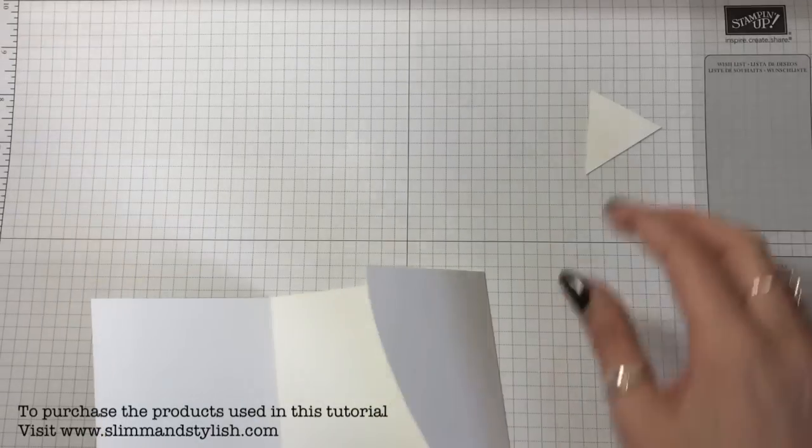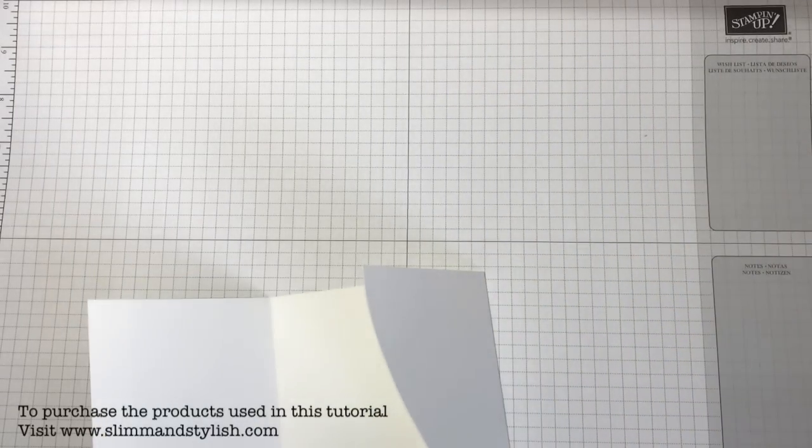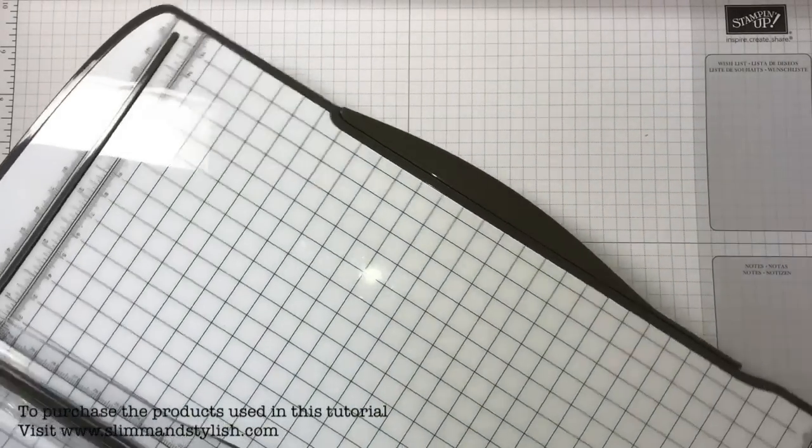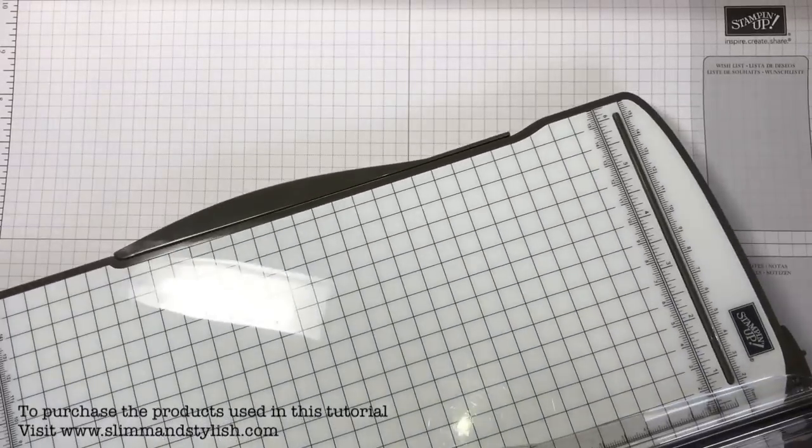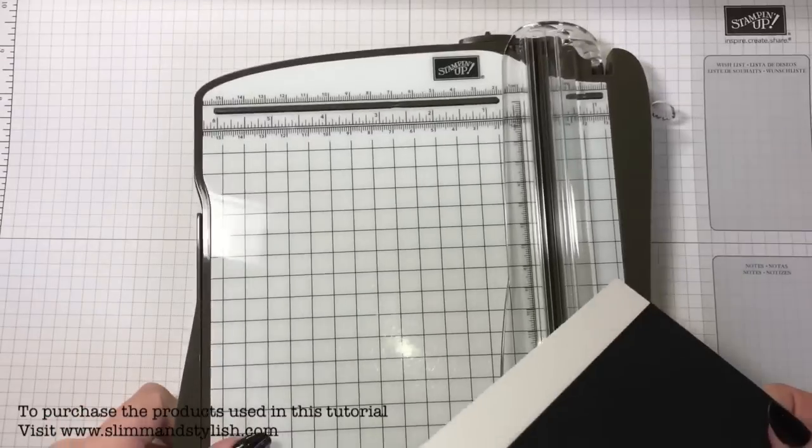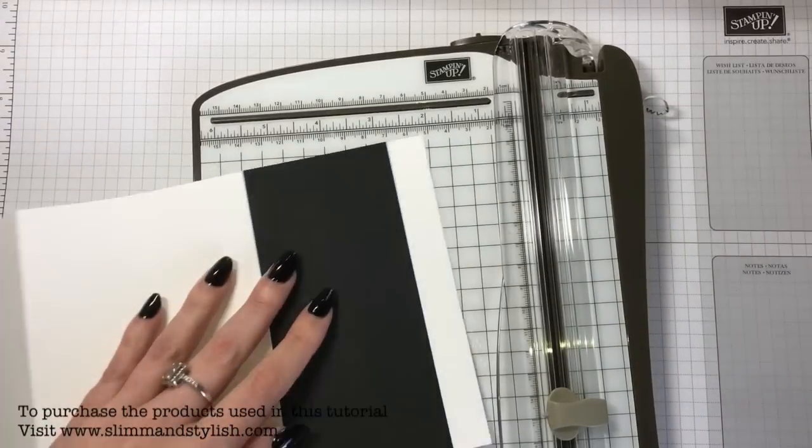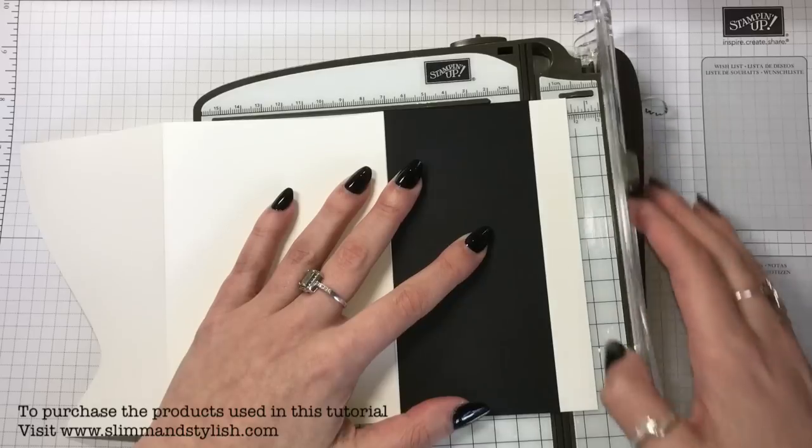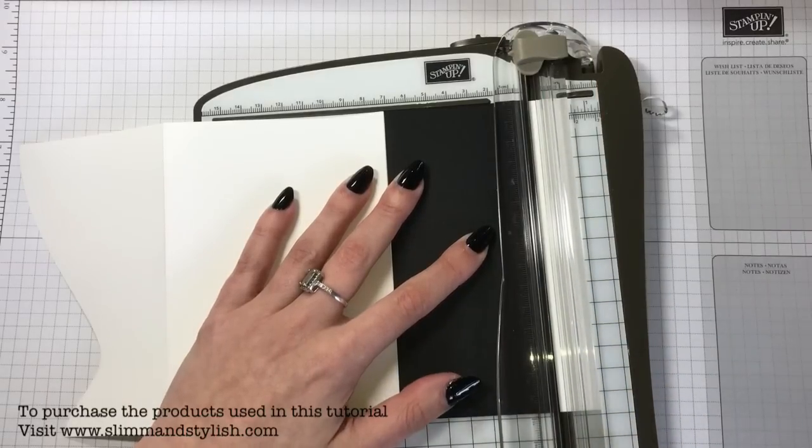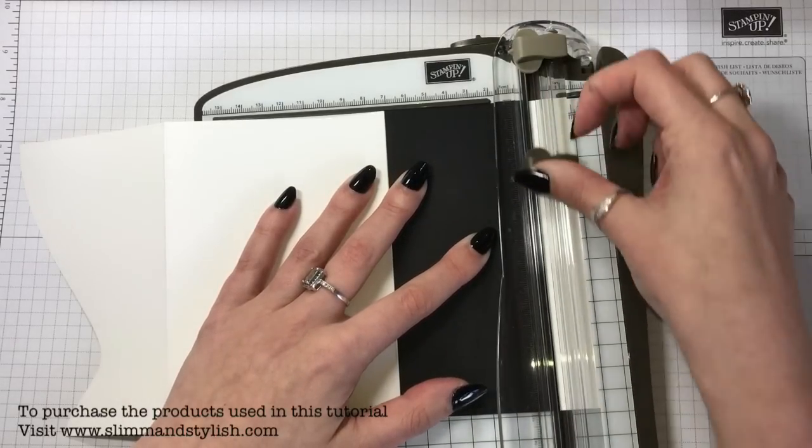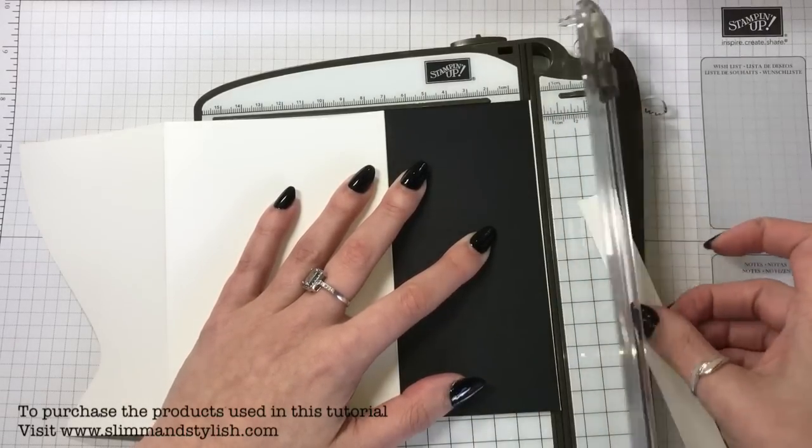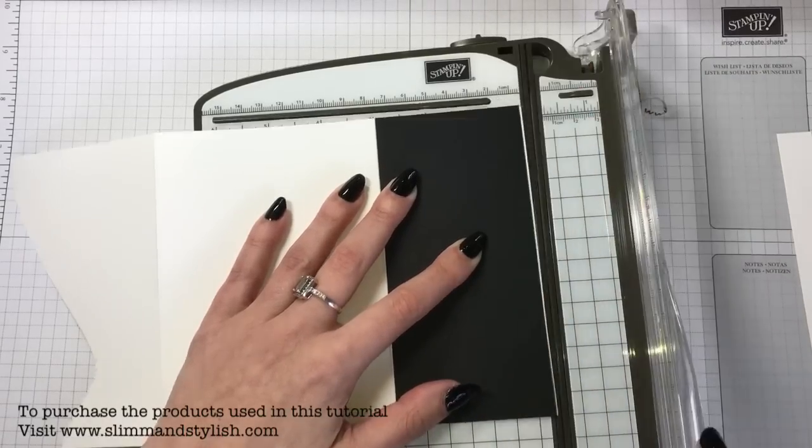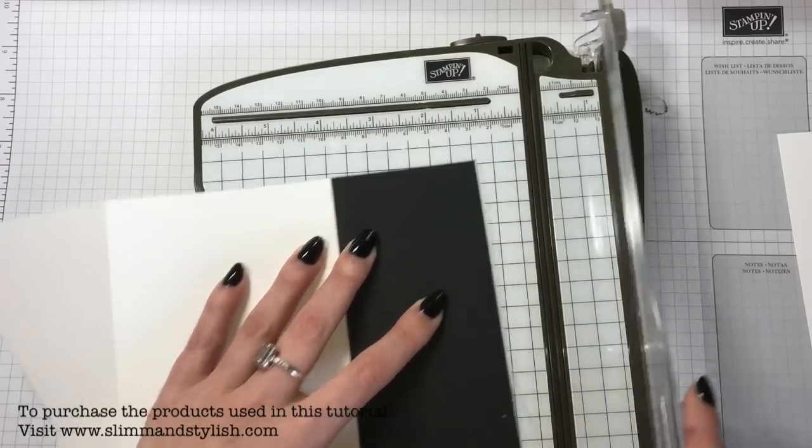If you've got your trimmer handy, if not you can use your snips again. You just want to trim that sort of half an inch off. I didn't do it before I scored the card or stuck it down because I wanted to make sure that it was in the 100% correct place and allow for any mistakes that I made.